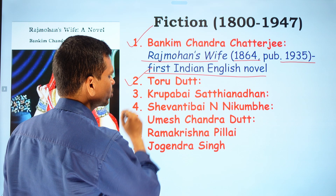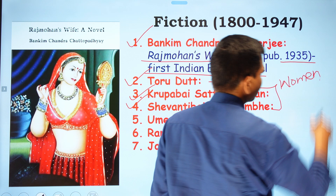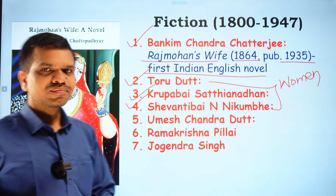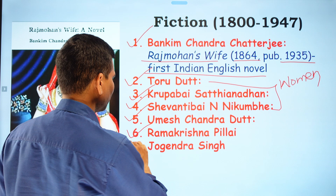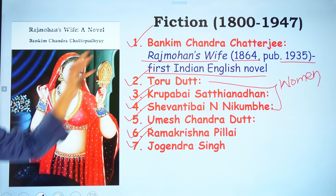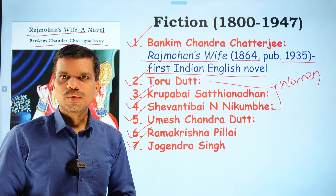Among women fiction writers of this period we have Toru Dutt, Krupabai Satthianadhan, and Sevantibai Nikambe. In the same lineup are Umesh Chandra Dutt, Ramakrishna Pillai, and Jogendra Singh. Rajmohan's Wife by Bankim Chandra is a very interesting novel depicting the scenario of that time.